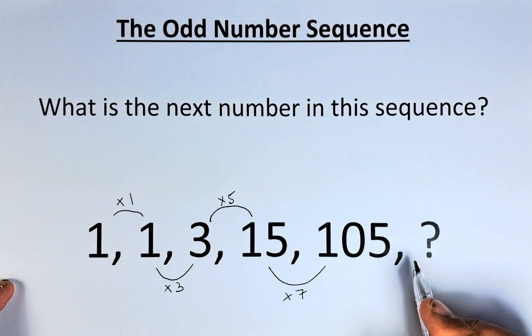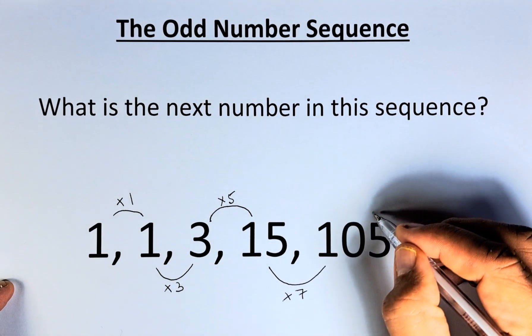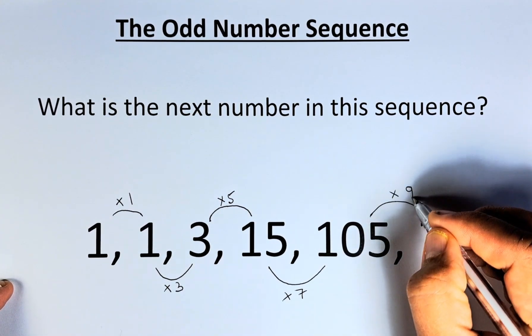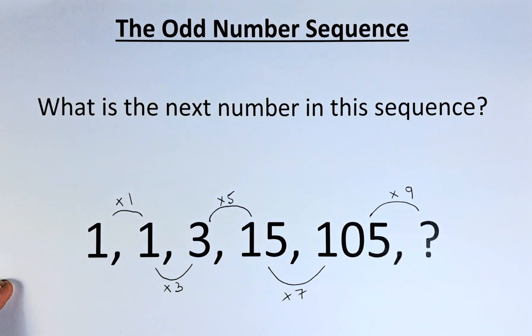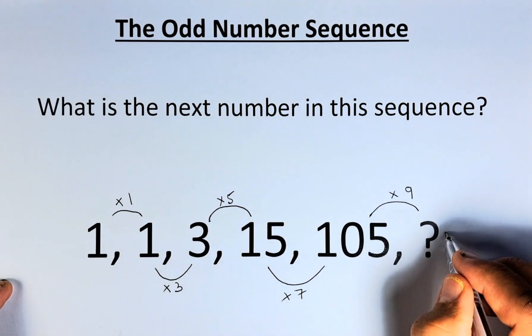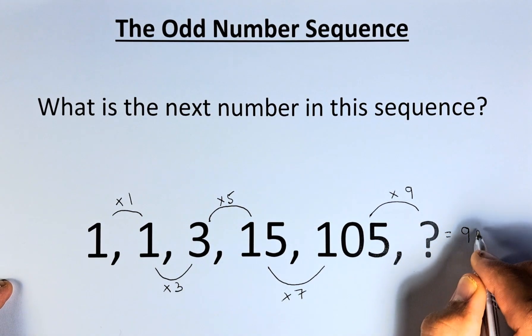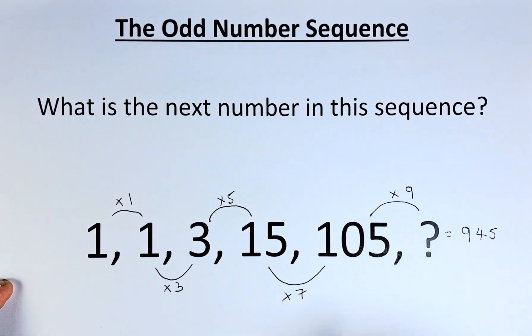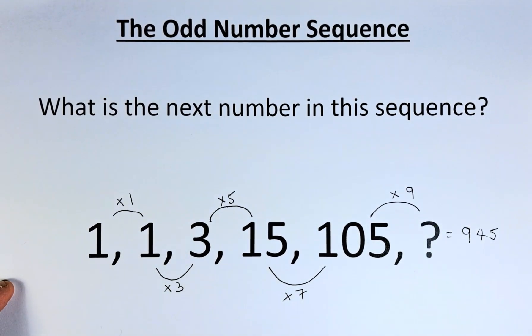And last but not least, to get the question mark, we take 105, and this time we are going to multiply by 9. So 105 multiplied by 9 will give you the answer of 945. So the question mark is equal to 945.